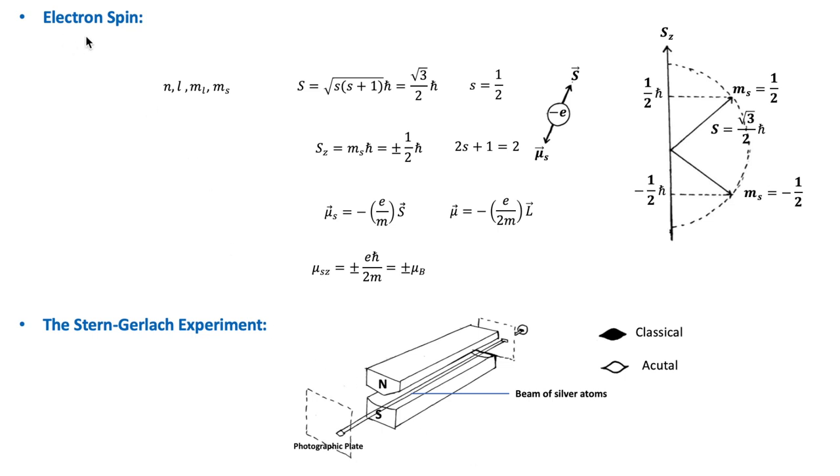one needs to take into account the electron spin and also Pauli's exclusion principle. And these two concepts enable us to understand atoms with more than just one electron.